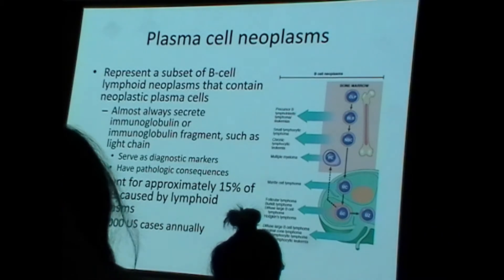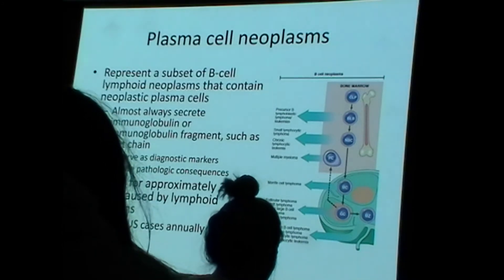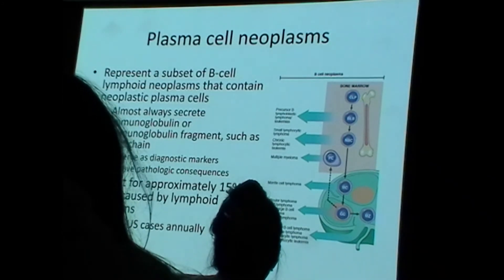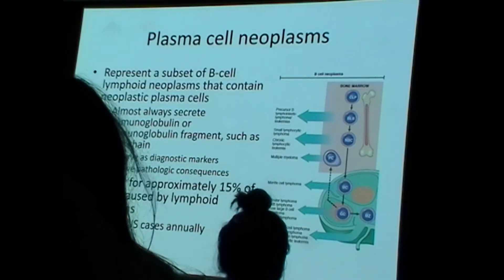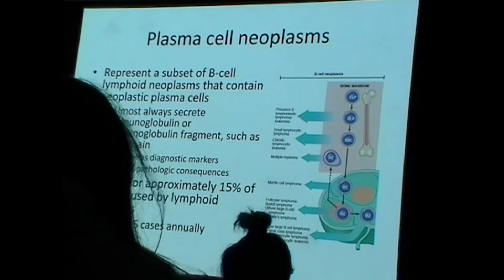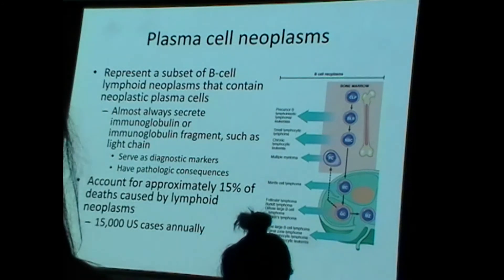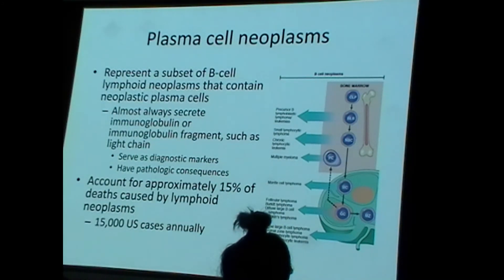What is very important about plasma cell lymphomas is that plasma cells normally function to create immunoglobulins. This is relevant both diagnostically — because the presence of abnormal immunoglobulin can be detected — and clinically, because excess immunoglobulin in the blood and peripheral tissues can cause symptomatic problems.